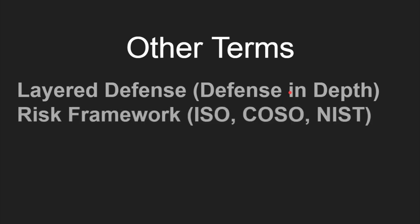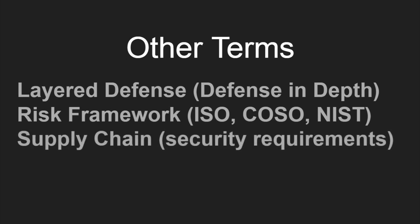A risk framework refers to the model that your organization adopts to manage its risk — I have a separate video that covers the various frameworks and how to memorize them. Supply chain refers to the flow of assets or data. Audits, surveys, reviews, and testing can be done in the supply chain, but the CBK says it's also acceptable to simply view the results of those audits and reports, and then use that to make recommendations or enhance security within those entities.